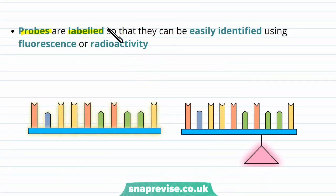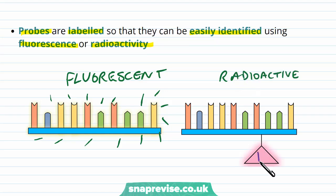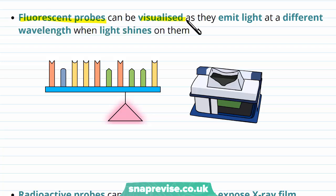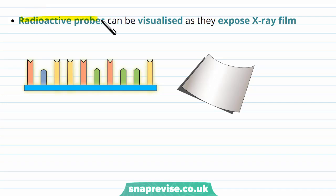The probes themselves are labeled so they can be easily identified using fluorescence or radioactivity. Fluorescent probes light up and give off visible signals. Radioactive probes contain a radioactive phosphate group (P-32) in their backbone, which can also be detected. Fluorescent probes emit light at a different wavelength when certain light shines on them. Radioactive probes can be visualized as they expose X-ray film, showing lines where the probe is located.